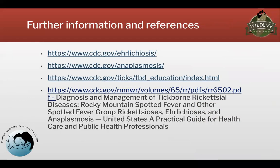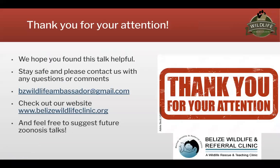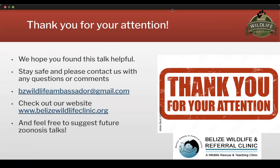To conclude, further information and references are available from the CDC, as well as a CDC manual on diagnosis and management of these diseases. As mentioned, ehrlichiosis and anaplasmosis are underdiagnosed — they need to be suspected, and people need to be more aware of them to keep humans safe. The most efficient way to eliminate these diseases for ourselves is treating our animals. Thank you very much for your attention. Please let us know of any questions, check out the Wildlife Ambassador Program, and feel free to suggest any future zoonosis or One Health talks of your interest.